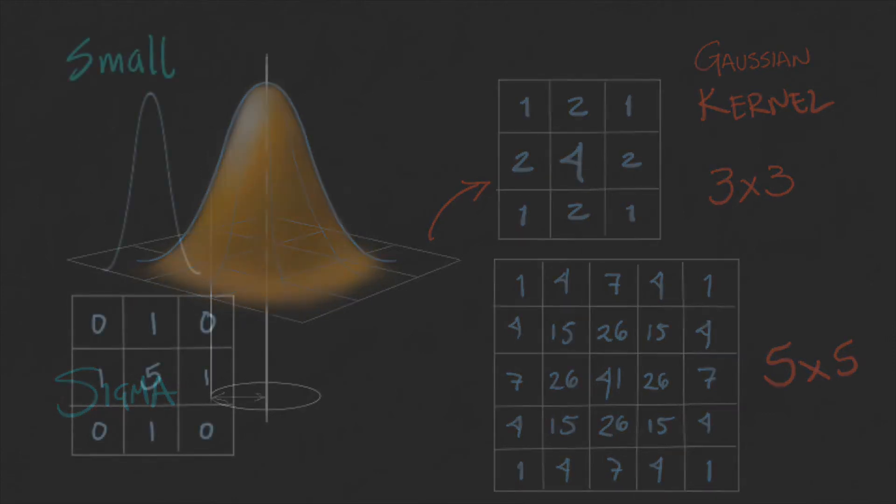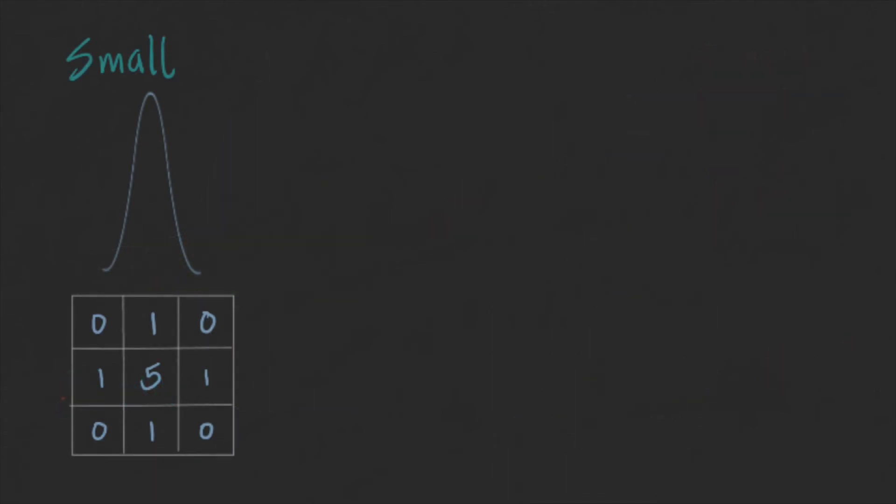If the sigma of the Gaussian is really small, let's say smaller than one pixel, then the filter will have a minimal effect, because the weight of the neighbors is really small.